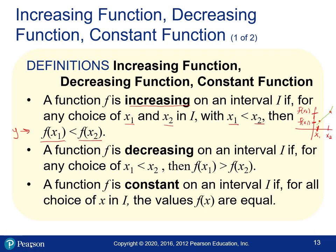A decreasing function is very much the same idea but opposite. When x1 is less than x2, the y-values switch — your first y-value is actually bigger than your second y-value. So your next x gives you a smaller y-value, meaning the function goes down toward the right. A constant function is one where for any x the y-value stays the same.